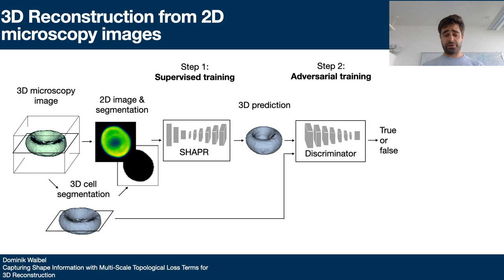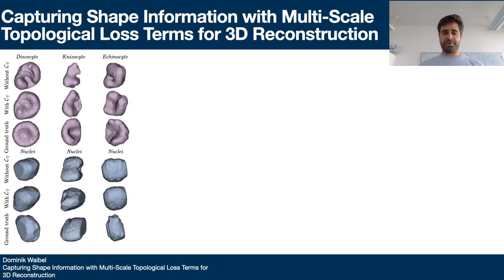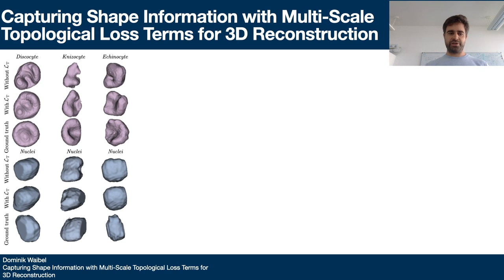Here we use 2D microscopy images to predict the 3D cell shape. Our two-step training approach includes a first supervised training step, and then a discriminator is added for a second adversarial training step. We perform two experiments: one using the topological loss and one not using the topological loss. In the first row you can see the results without the topological loss, and in the second row the results with the topological loss.